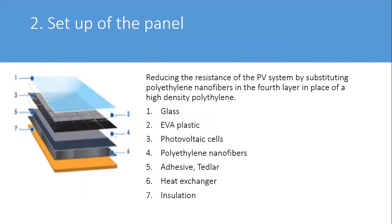The setup of the panel is seven layers: glass, EVA plastic, photovoltaic cells, polyethylene nanofibers, adhesive TEDLAR, and a heat exchanger surrounded by insulation. Reducing the resistances of the PV system by substituting polyethylene nanofibers in the fourth layer in place of high-density polyethylene would increase this efficiency.